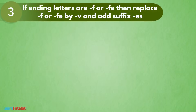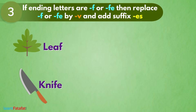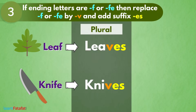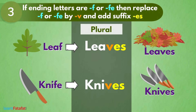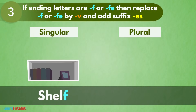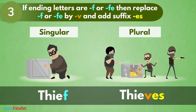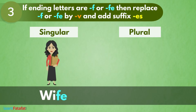If ending letters are -f or -fe, then replace -f or -fe by -v and add suffix -es. अगर कोई word f या fe से end हो रहा है जैसे leaf और knife, तो उसे plural बनाने के लिए f या fe इन letters को v से replace करके -es suffix किया जाता है। तो बना leaves और knives। इसके और examples हैं: shelf → shelves, thief → thieves, wife → wives।